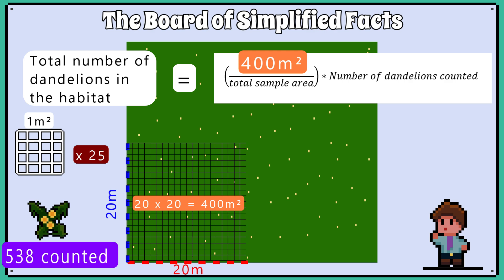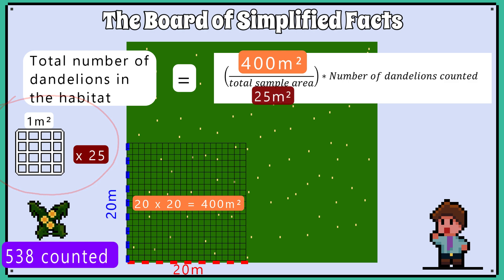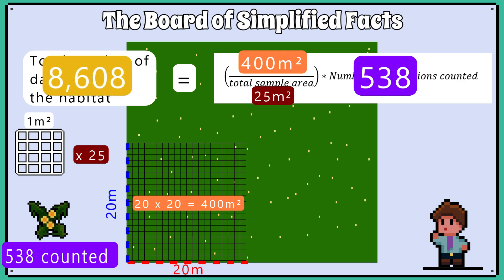The total area is 400 square metres. The area sampled is the area of the quadrat multiplied by how many times we placed our quadrat down and counted — in this case 25 times multiplied by 1 square metre, giving us a sample area of 25 square metres. So, 400 divided by 25, multiplied by 538 — the number of dandelions we counted — gives us an estimate of 8,608 dandelions in this 400 square metre area.